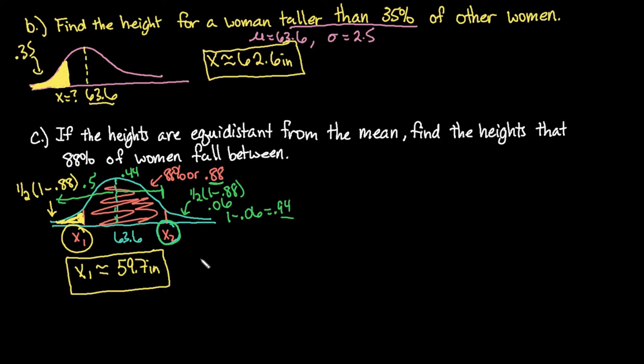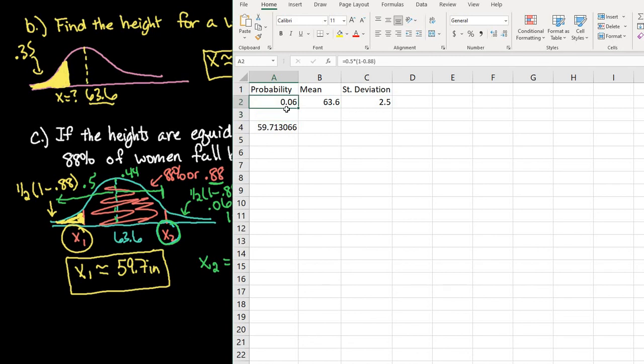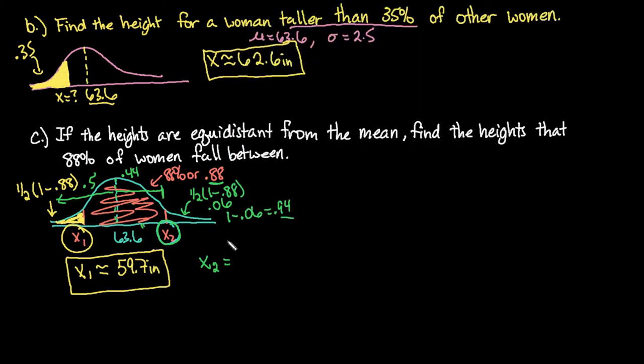And so that's what we would plug in. The only thing that we would want to change here is we're going to change this to .94. I could have also done one minus that value and done it that way too. So there's a lot of different options. Just keep in mind that you can't just plug in the .88.